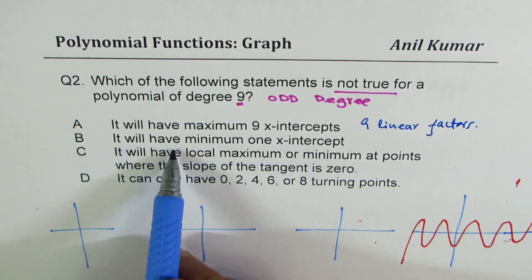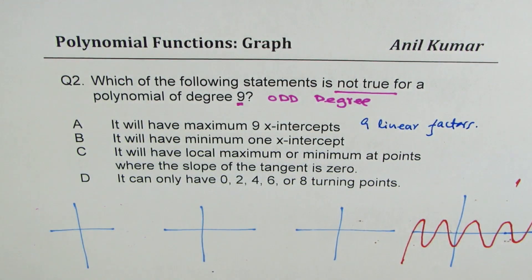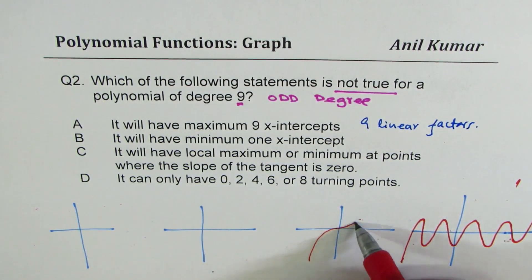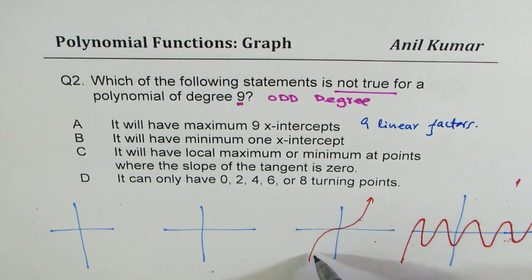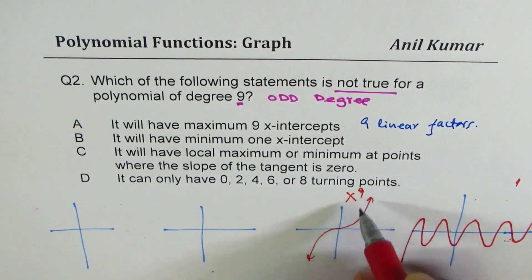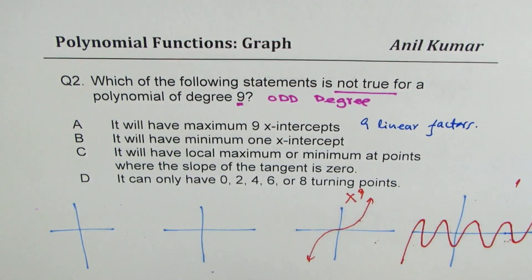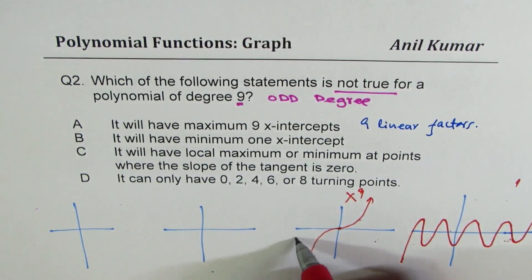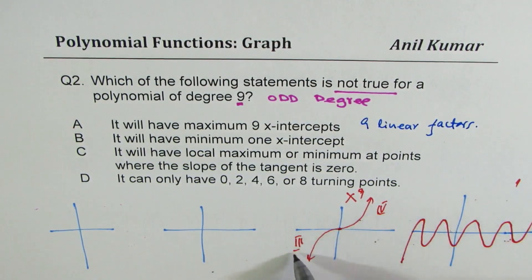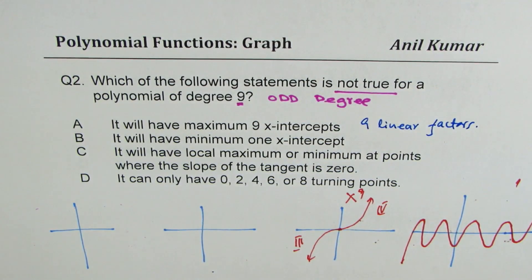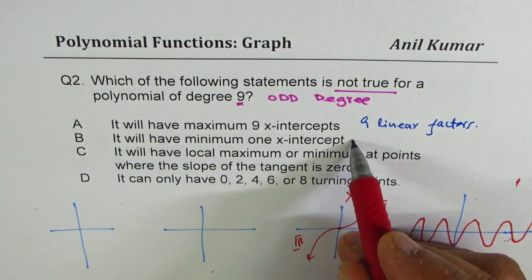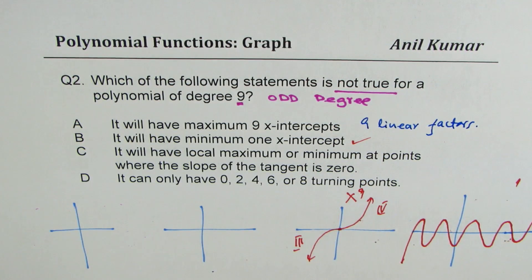Second: it will have minimum 1 x-intercept. That is right — it could look like x to the power of 9 with a positive leading coefficient giving 1 x-intercept. Since you have to move from quadrant 3 to quadrant 1, at least once you are going to cross the x-axis. So minimum 1 x-intercept is correct.